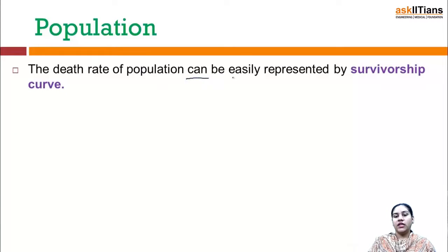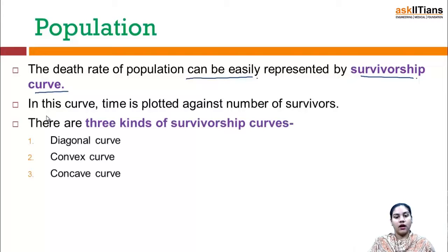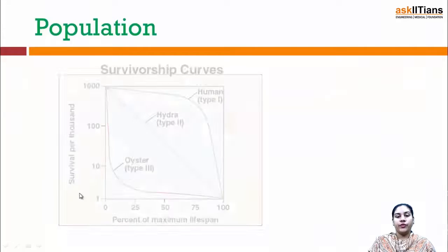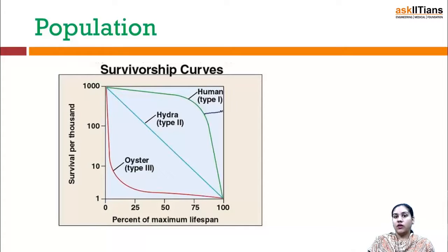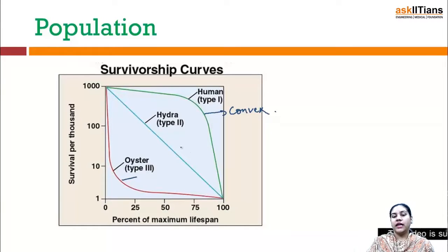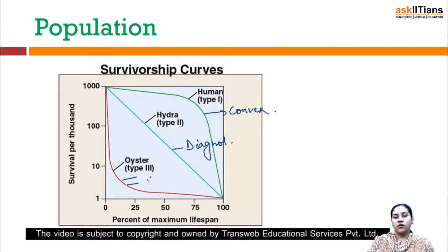The death rate of a population can be easily represented by a curve known as a survivorship curve. In this curve, time is plotted against the number of survivors, and there are three kinds of survivorship curves: the diagonal curve, the convex curve, and the concave curve. All three types are shown in this diagram. Type 1 is the convex curve, Type 2 is the diagonal curve, and Type 3 is the concave curve.